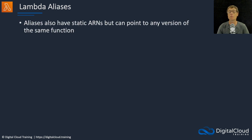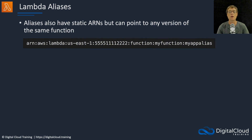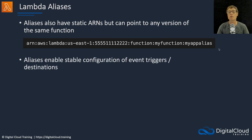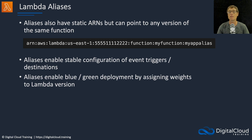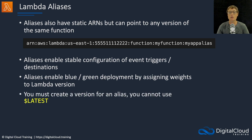Aliases have static ARNs but can point to any version of the same function — for example, my-function:my-app-alias. Aliases enable stable configuration of event triggers and destinations, and are great for your application because you can hard-code the alias ARN and never need to change it in your application code. Aliases can also enable blue/green deployments by assigning weights as we've just seen. Note that you must create a version for your alias — you cannot use $LATEST.